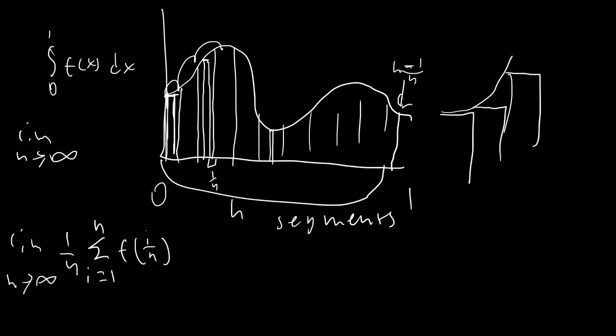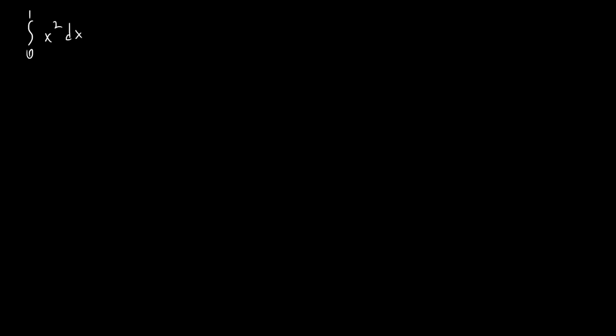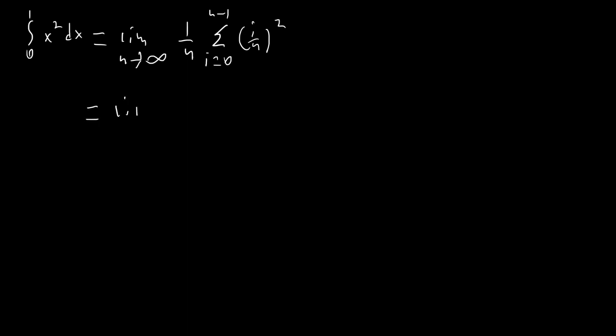Let's see how we can use this to evaluate a few pretty simple integrals. The first one is the integral from 0 to 1 of x squared dx. I can't remember the power rule, so I'm going to use the definition for integration. This is going to be the limit as n goes to infinity of 1 over n times the sum from i equals 0 to n minus 1 of x squared, which simplifies to 1 over n cubed times the sum from i equals 0 to n minus 1 of i squared.